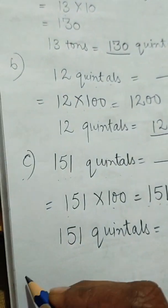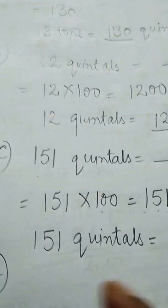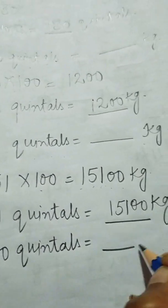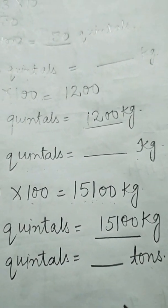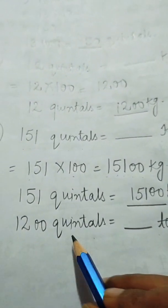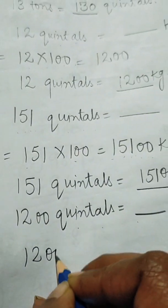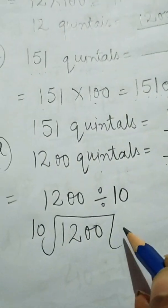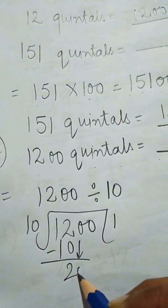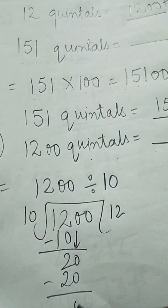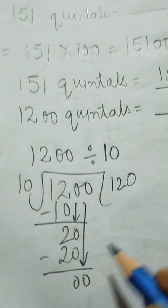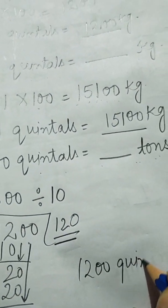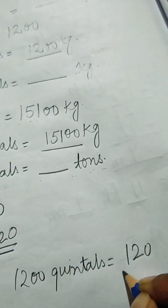Part (d): 1200 quintals is equal to how many tons? To convert quintals into tons, divide quintals by 10. So 1200 divided by 10 gives 120. Therefore, 1200 quintals is equal to 120 tons.